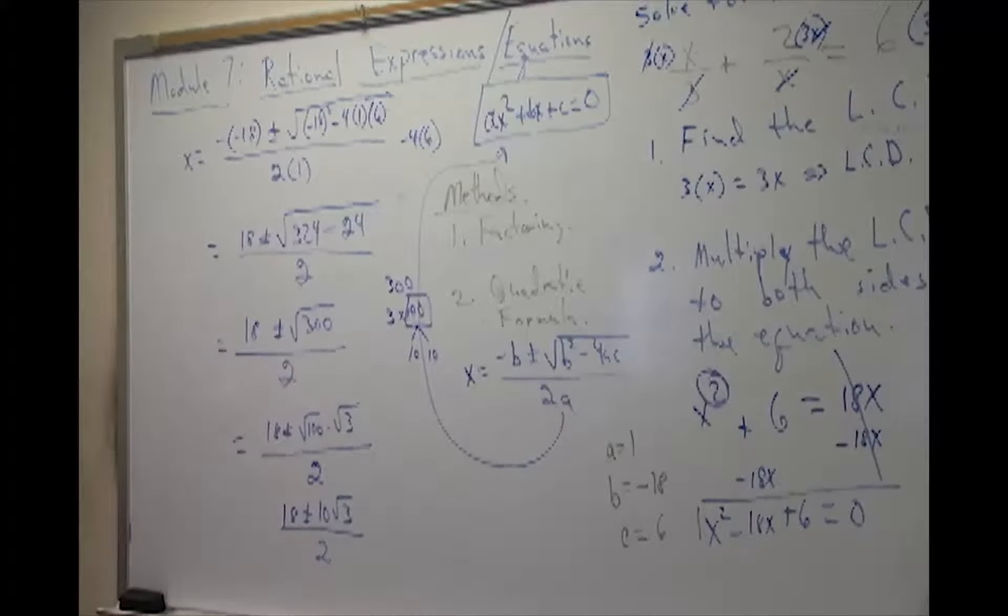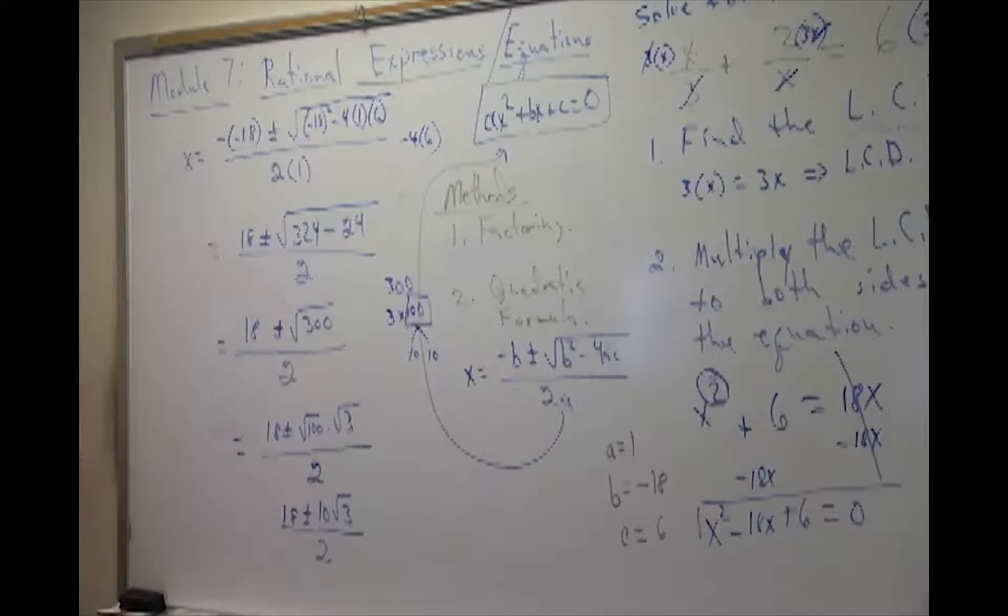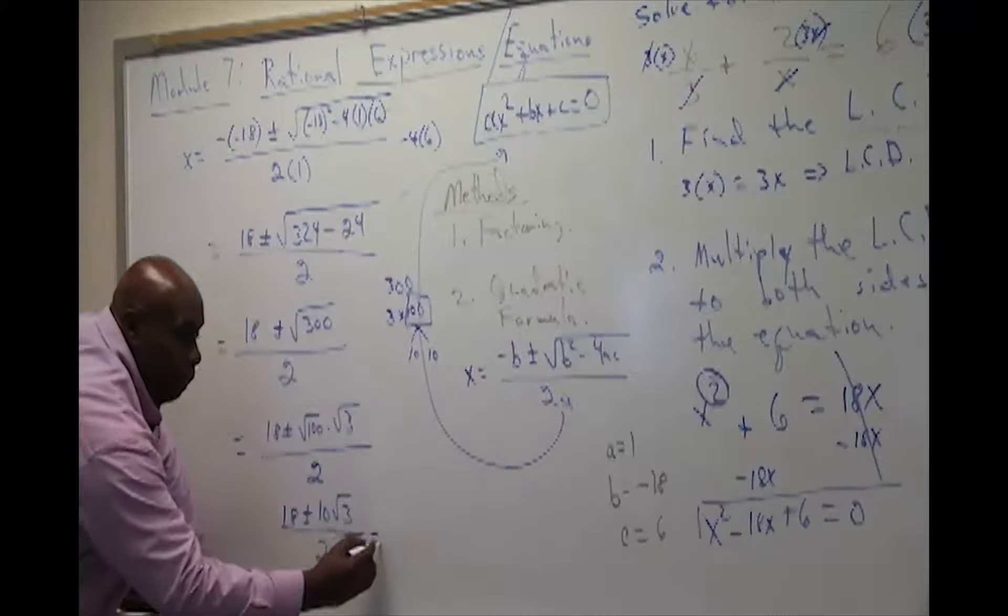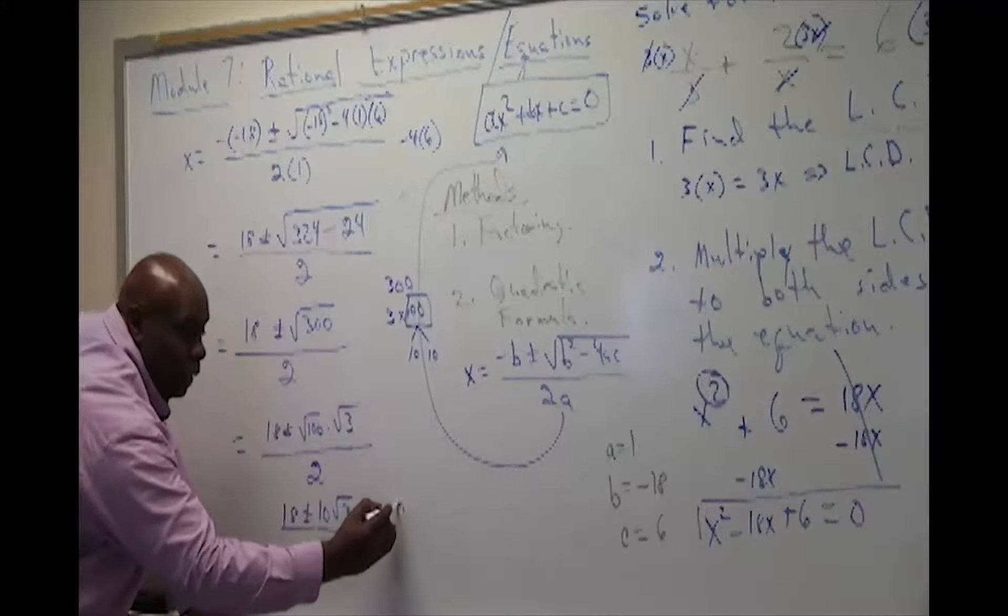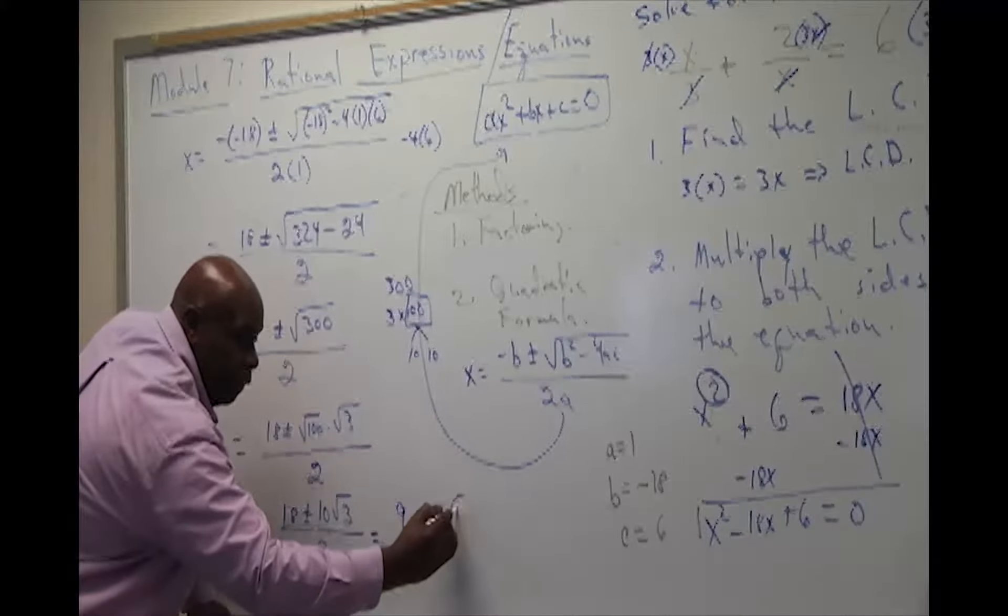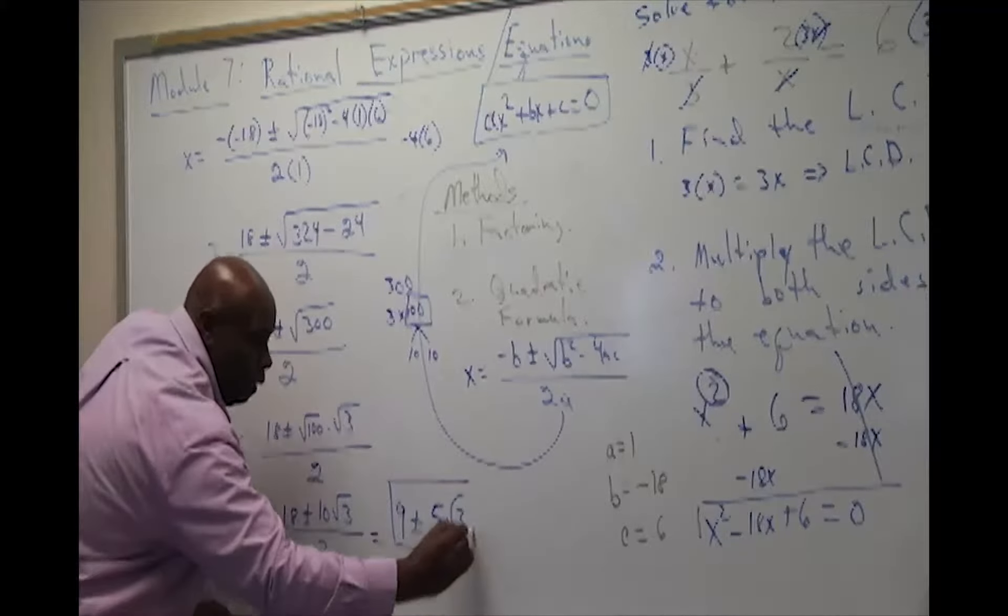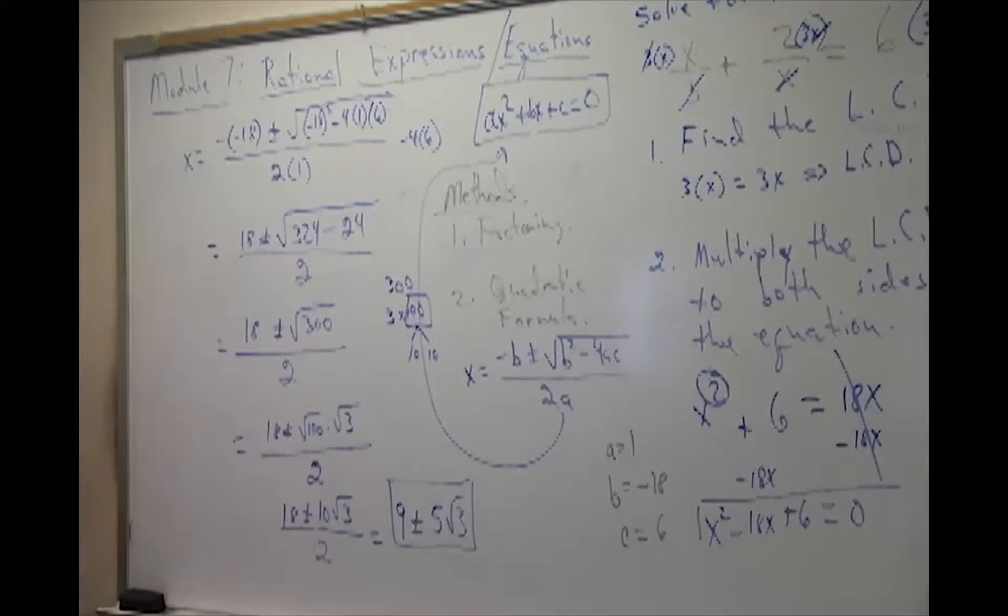So our final answer, when you look at it, we can divide 2 into both 18 and 10. And that's what you all would attempt to do. And half of 18 is 9 plus or minus, and half of 10 is 5. So the final answer that we want you to use would be 9 plus or minus 5 the square root of 3. This is what you would use for getting your answer. So this would be it.